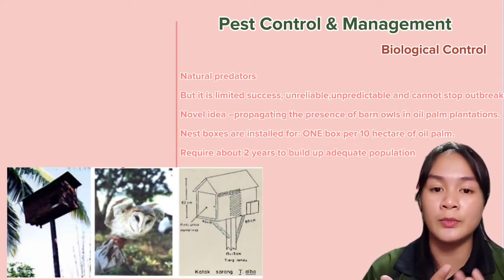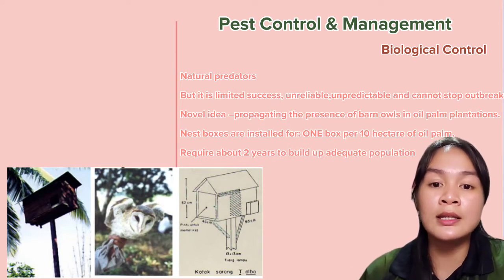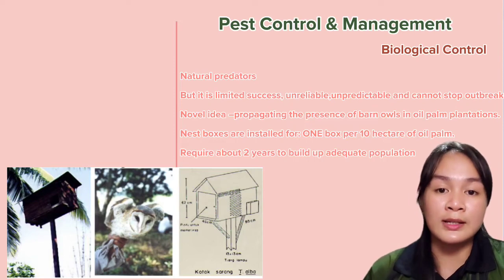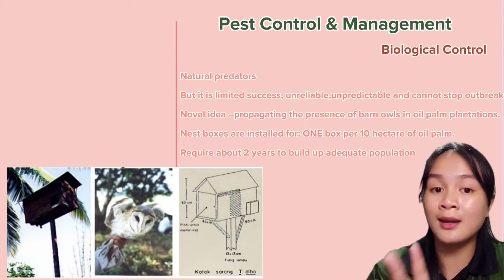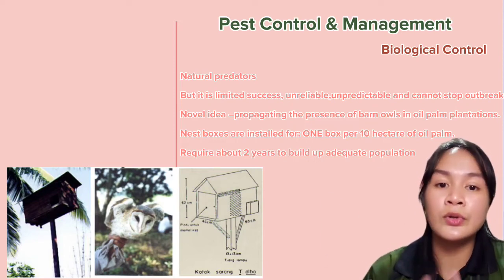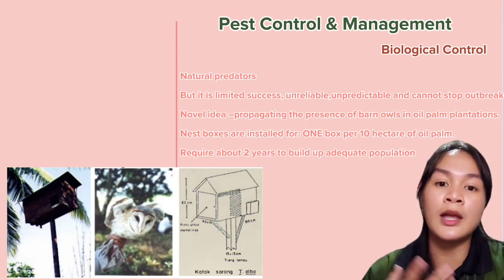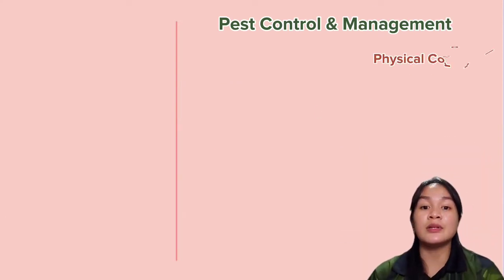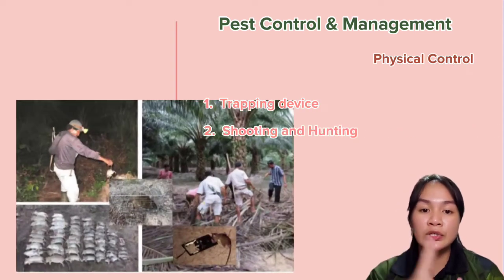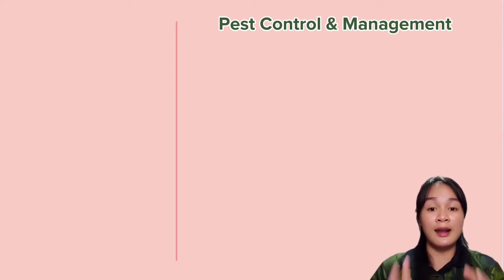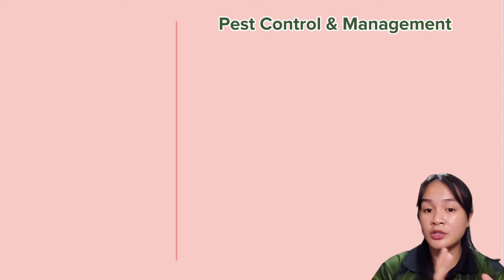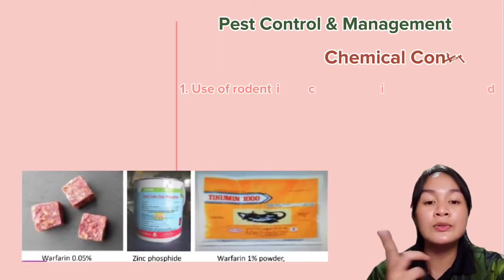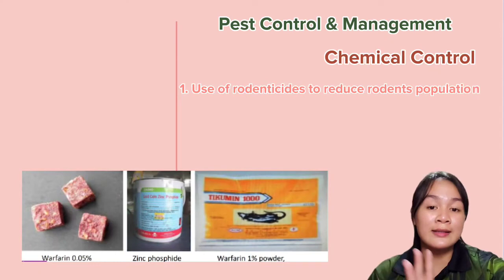Biological control uses natural predators such as barn owls, but this has limited success as it is unreliable, unpredictable, and cannot stop an outbreak. Barn owl boxes are installed at one box per 10 hectares of oil palm, and it requires about two years to build an adequate population of barn owls. Physical control can involve trapping devices, shooting, and hunting.